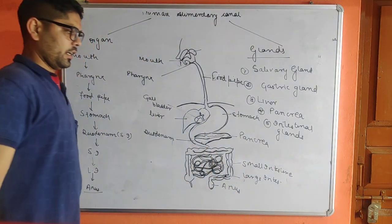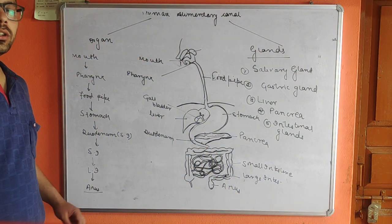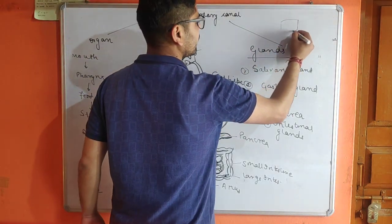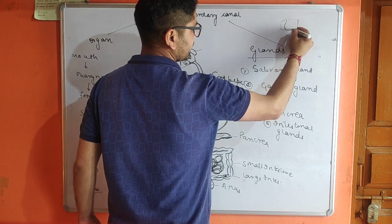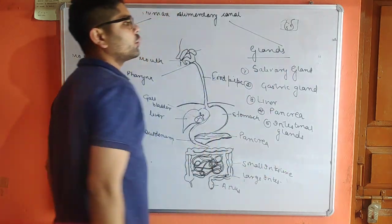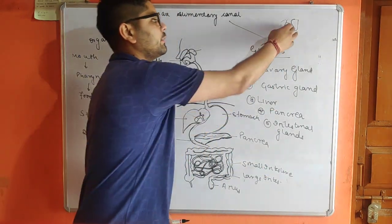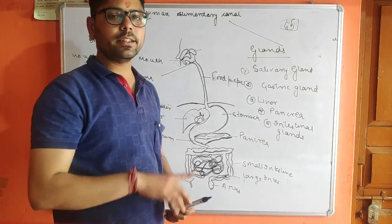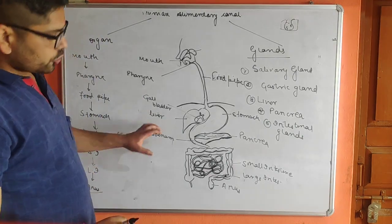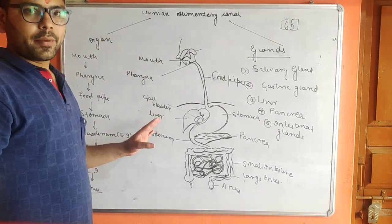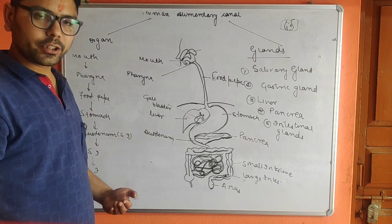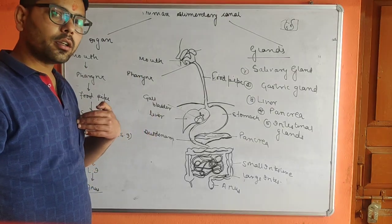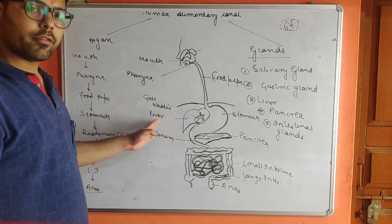Inside the wall of the small intestine, glands are also present which secrete liquid — these are called intestinal glands. This is an overview of the alimentary canal. In the next video, we will discuss how digestion occurs, in which part, which food is digested, and with the help of which enzyme. If you have any queries, do ask.